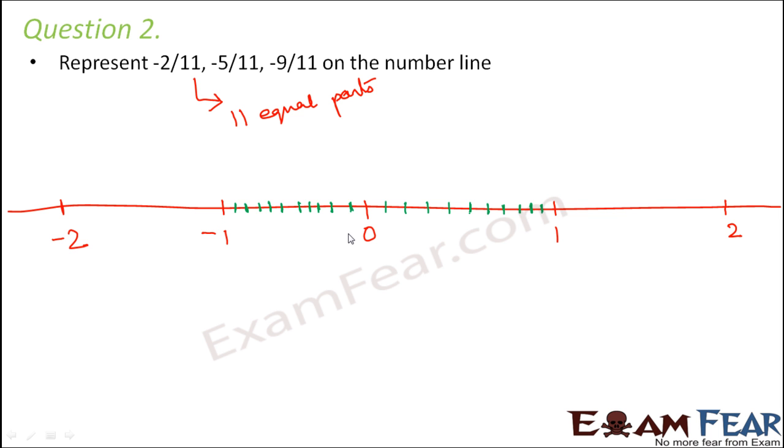So let us now start locating the points. So this is 0. What would be this point? This is 1 part out of 11 parts, so this would be -1/11. The next point would be -2/11, the next point would be -3/11, so this would be -4/11, this would be -5/11, this would be -6/11, -7/11, -8/11, -9/11. This would be -10/11 and finally this would be -11/11, that is -1. So we had to locate -2/11, -5/11 and -9/11. So these are the 3 points on the number line. So this is the technique how you locate rational numbers on a number line.